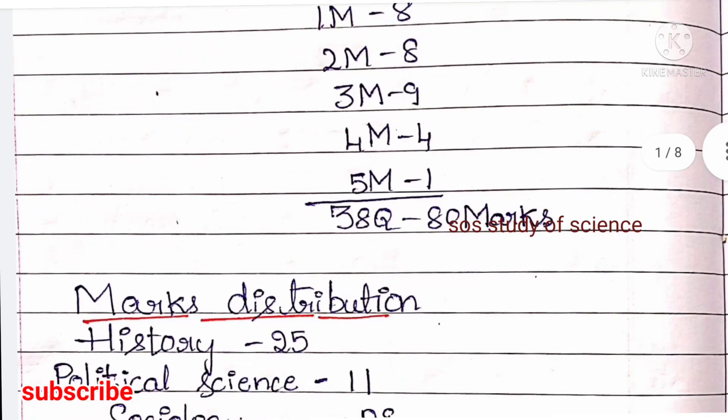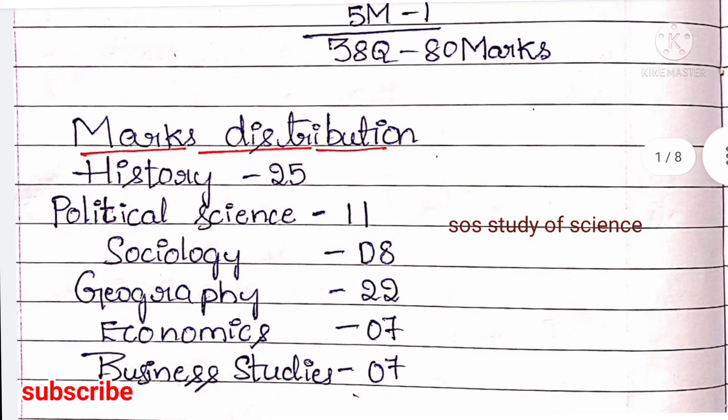Your examination will be conducted on 6th of April. Now I would like to tell about the marks distribution, as discussed in the Akashavani program. History: 25 marks. Political Science: 11 marks. Sociology: 8 marks. Geography: 22 marks. Economics and Business Studies: 7 marks each. Totally 80 marks for your examination.